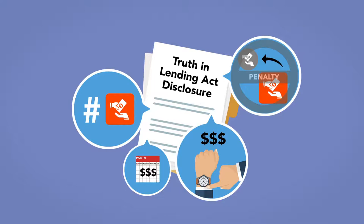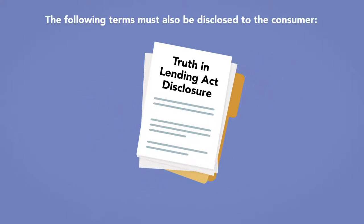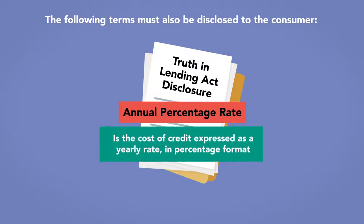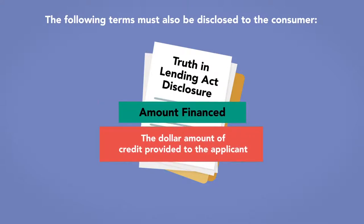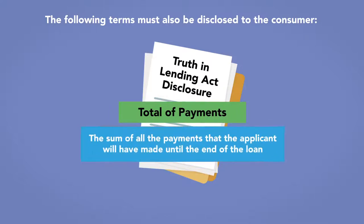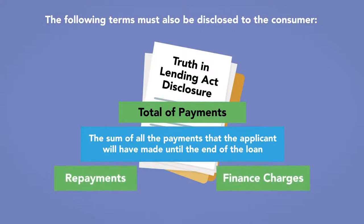Furthermore, the following items must be disclosed to the consumer: the Annual Percentage Rate (APR), which is the cost of credit expressed as a yearly rate in percentage format; the amount financed, which is the dollar amount of the credit provided to the applicant; and the total number of payments, which also includes the sum of all payments that the applicant will have made by the end of the loan, including repayment of the principal plus the finance charges.